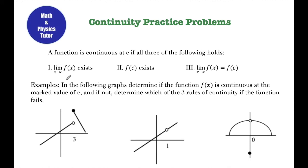The directions say: in the following graphs, determine if the function f of x is continuous at the marked value of C, and if not, determine which of the three rules of continuity the function fails. I'm going to have to specify which pieces of the definition are failing — and there could be more than one.